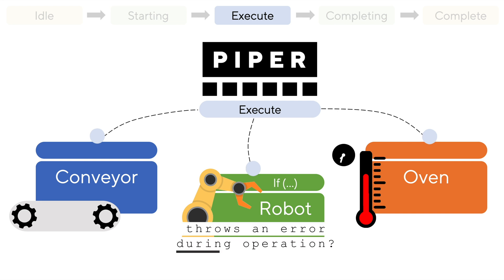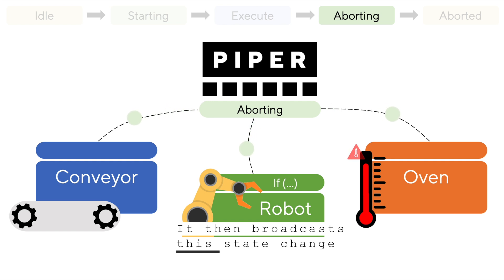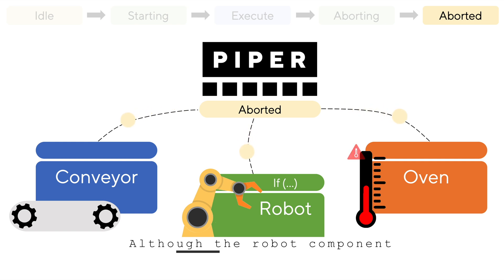What happens now if a component throws an error during operation? Let's suppose the oven exceeds its maximum allowable temperature. It stops its local process and registers an error with Piper. Piper treats this component error as an abort command and will then deviate from the normal state progression to instead enter into the aborting state. It then broadcasts this state change and each component responds appropriately. The robot and conveyor forcibly stop any motion, while the oven lowers its temperature to a safe value. Piper then transitions to the aborted state once all components are done. Although the robot component is unaware of the oven component, it still responds gracefully in the event that the oven throws a fault. This provides true isolation of component logic without compromising overall system agility.